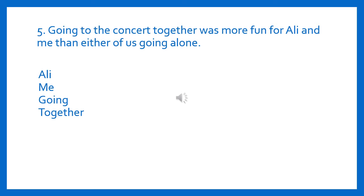Next sentence: 'Going to the concert together was more fun for Ali and me than either of us going alone.' We have four options: Ali, and, me, going. Ali is a noun, as you have recently learned. The correct answer is 'me.' Me is the first person singular personal pronoun, objective case.